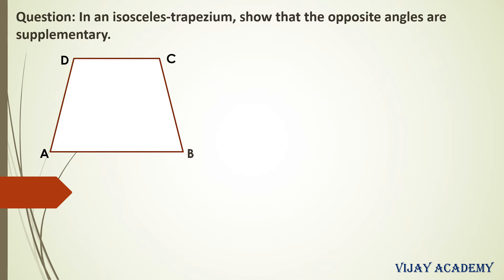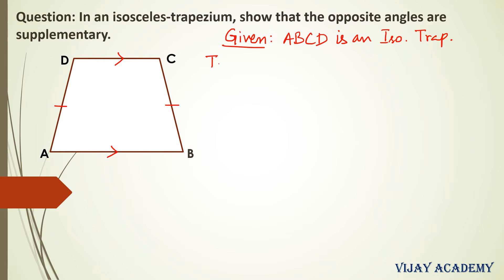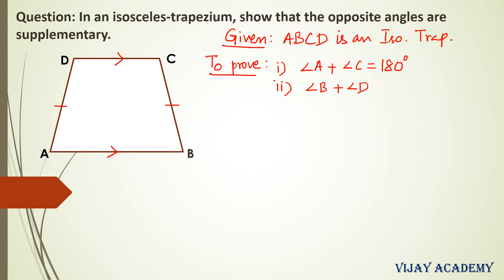We are supposed to prove that angle A and angle C are supplementary, and angle B and angle D are supplementary. Let us mark the parallel sides in the isosceles trapezium: AB and CD are parallel, and the non-parallel sides are equal, which are AD and BC. So let me write the given information: ABCD is an isosceles trapezium. We have to prove that angle A plus angle C equals 180 degrees, and angle B plus angle D equals 180 degrees.